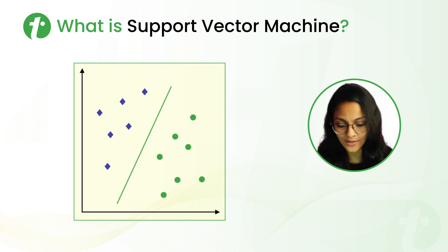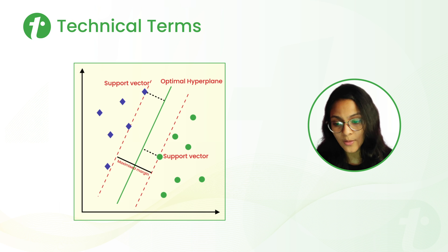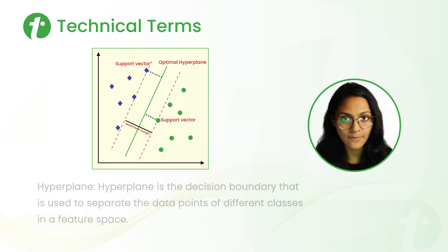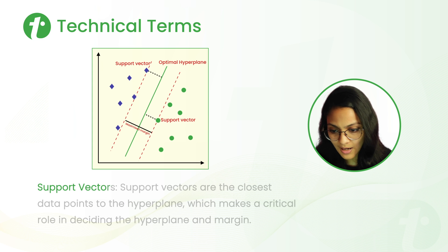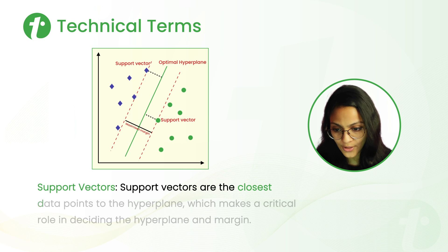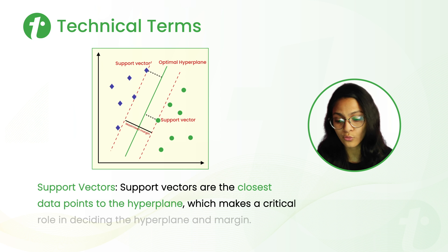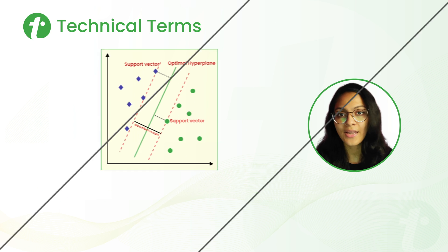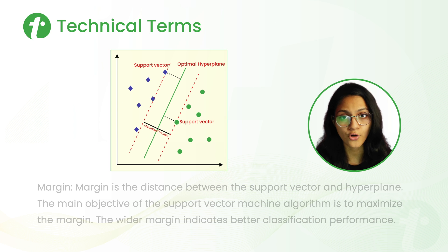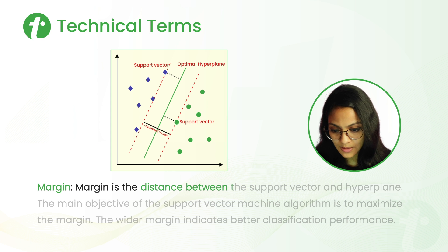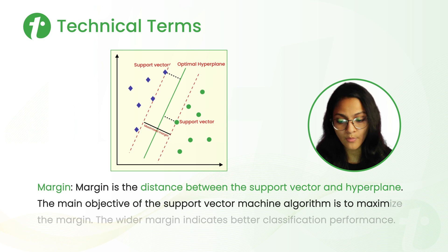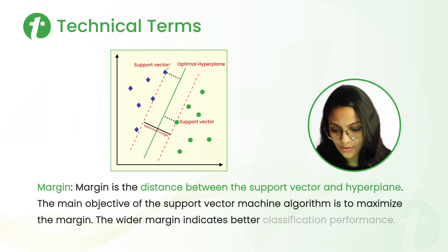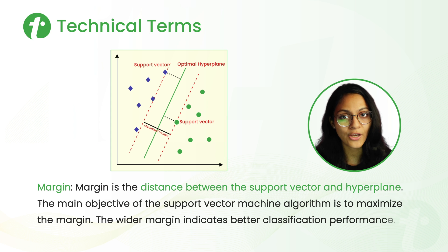Before diving into why we chose that line, let's understand some technical terms of the support vector machine. First is hyperplane — the decision boundary used to separate the two categories. Next is support vectors: the closest data points to the hyperplane, which play a critical role in deciding the hyperplane and the margin. Next, margin is the distance between the support vector and the hyperplane. The main objective of SVM is to maximize the margin; a wider margin indicates better classification performance.